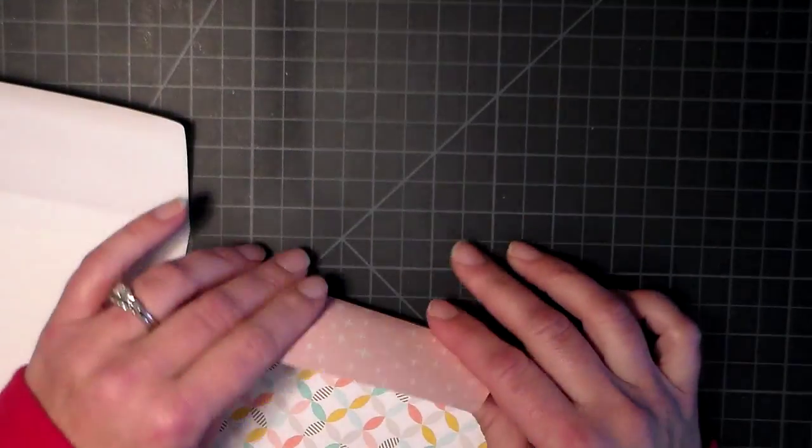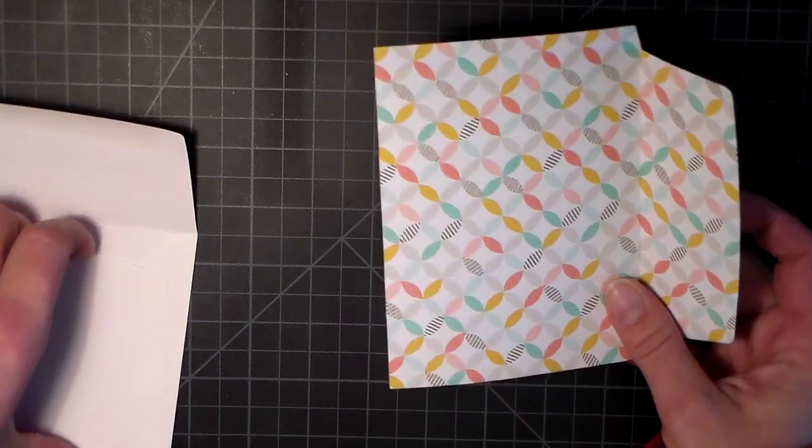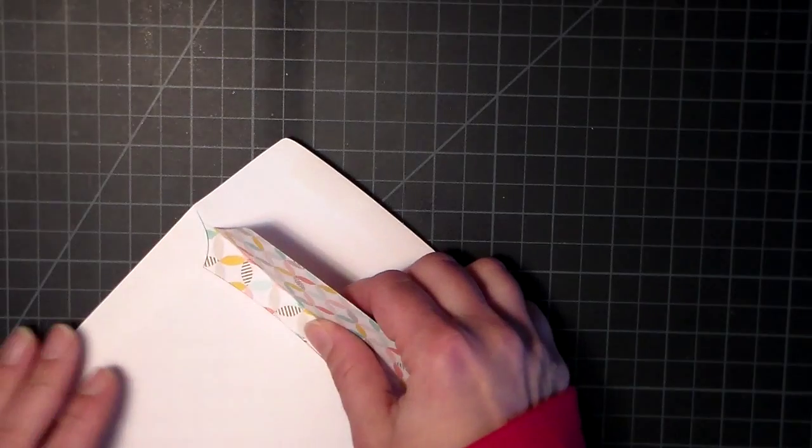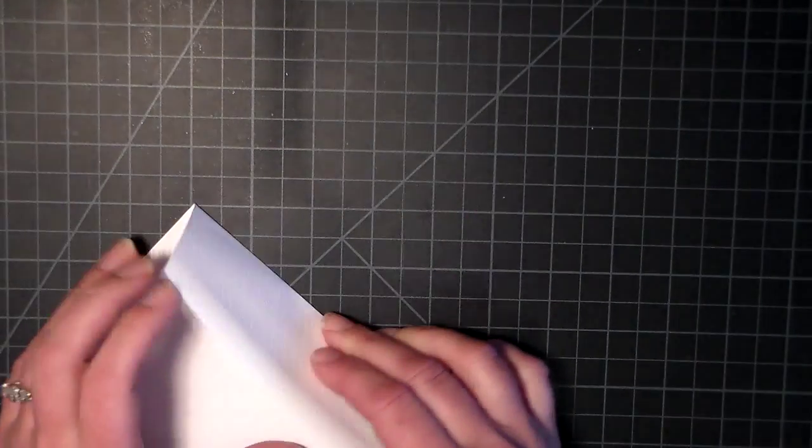Now I want to give that a good crease, just like that. I'm going to slip this wide end into my envelope and then match that crease up with the crease that's already on the envelope.